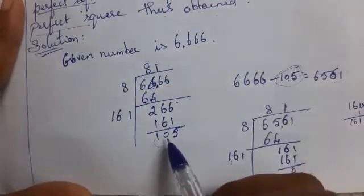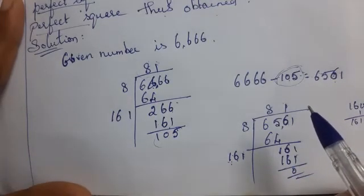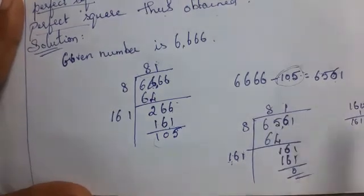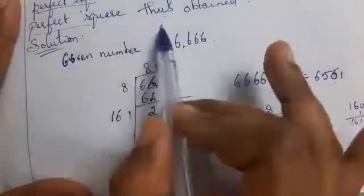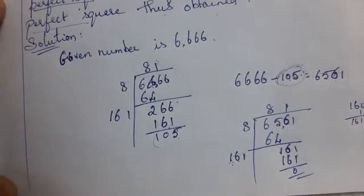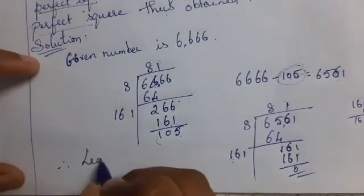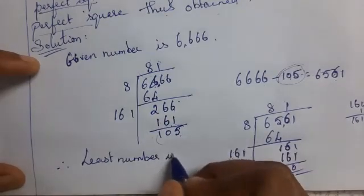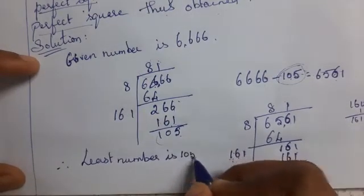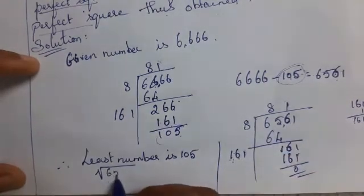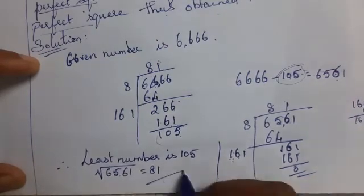The remainder is the least number to subtract. To find the square root: square root of 6,561 is equal to 81. The least number that must be subtracted is 105, and the square root of 6,561 is 81. This is the answer.